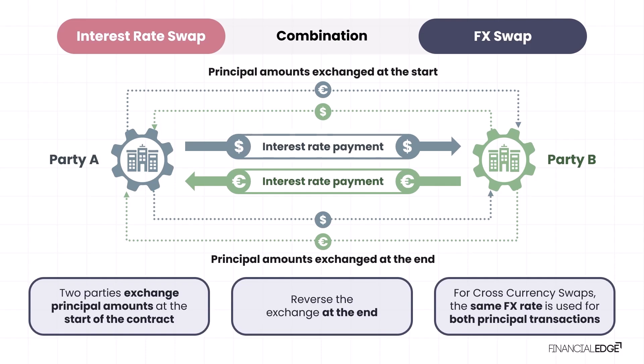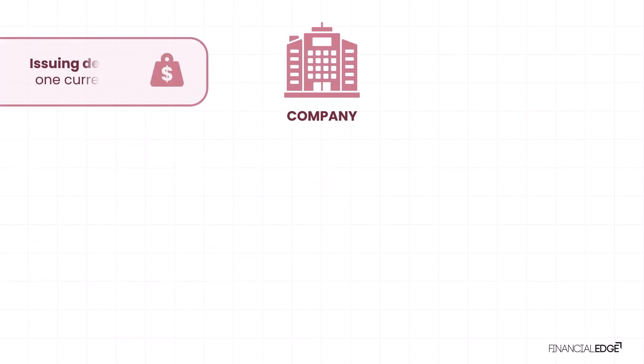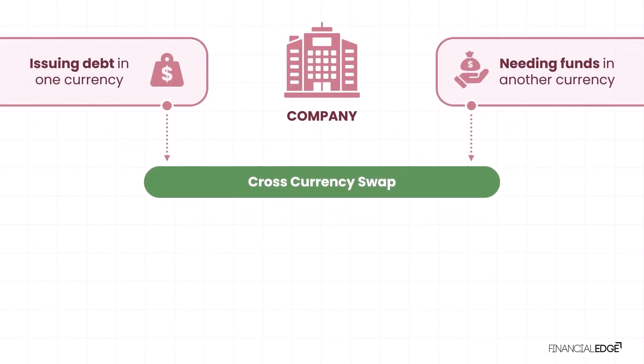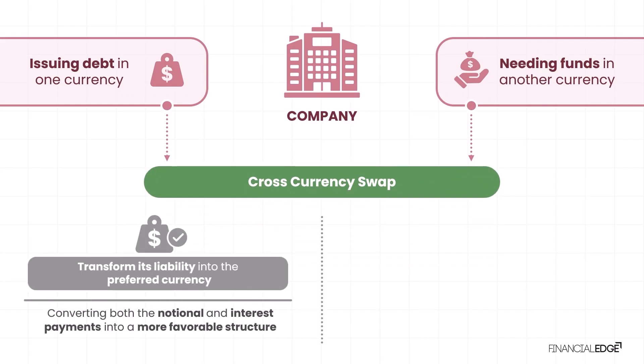These mechanics make cross currency swaps particularly useful when an entity needs to convert both the principal and interest rate payments of a loan or investment into another currency. For example, a company issuing debt in one currency but needing funds in another can use a cross currency swap to transform its liability into the preferred currency, effectively converting both the notional and interest payments into a more favorable structure.